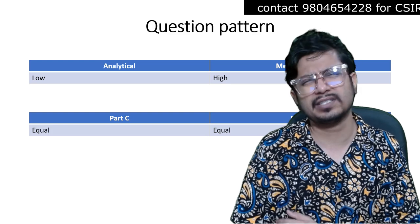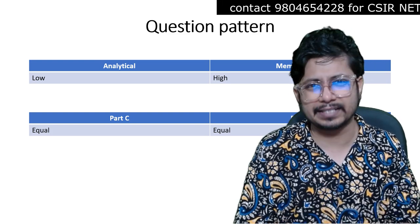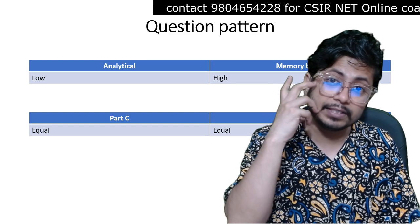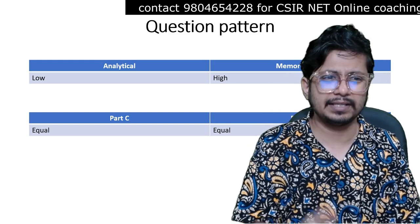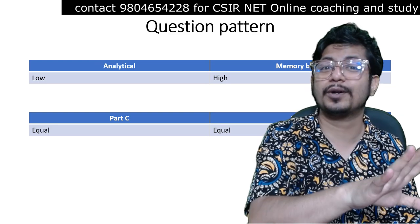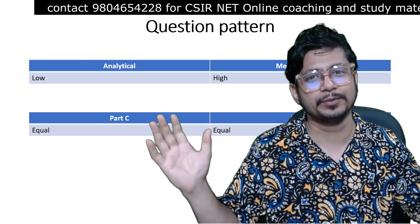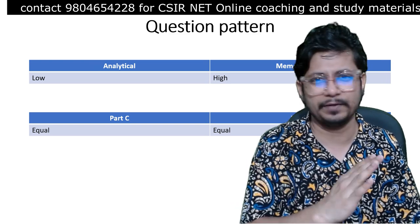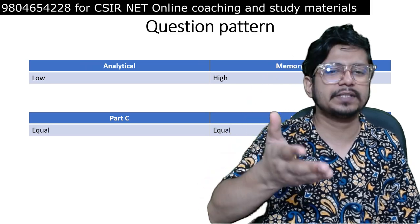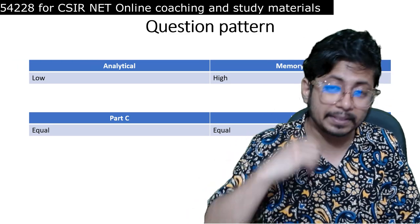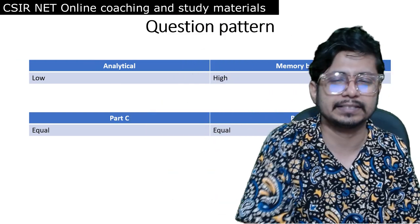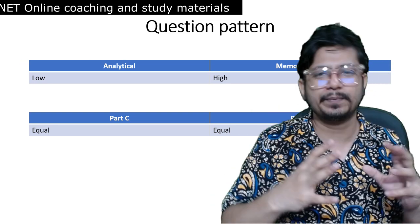Between Part C and Part B, the distribution is almost equal. This is physiology — a little more advanced than plus two — so even if you prepare well, it will take more time. Since it is mostly memory-based, you need to read it just one month or one and a half months before the exam. Otherwise you will forget. If you prepare in the first month of preparation and then appear in the exam after a year, you will forget everything. So prepare them just before the exam.